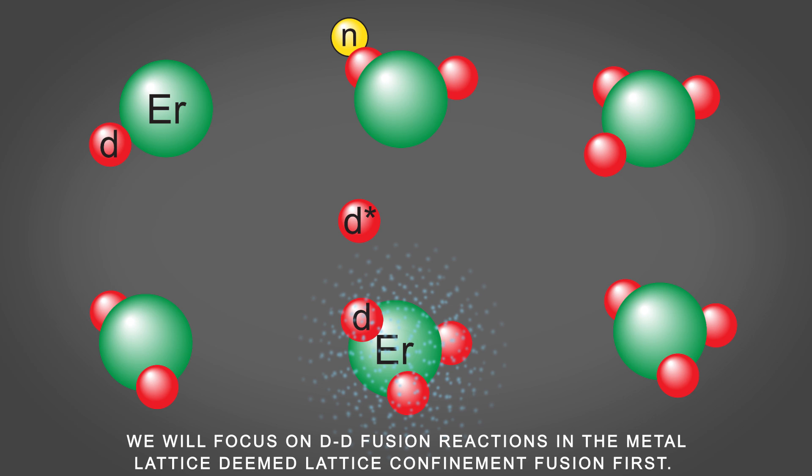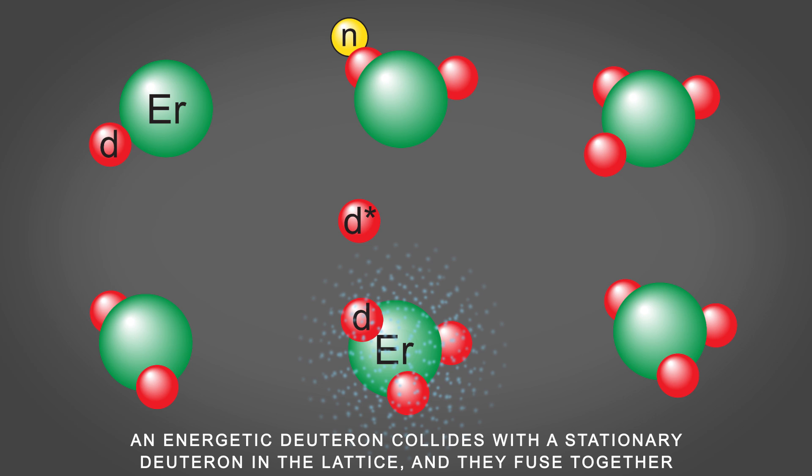We will focus on DD fusion reactions in the metal lattice, deemed lattice-confinement fusion, first. An energetic deuteron collides with a stationary deuteron in the lattice, and they fuse together.